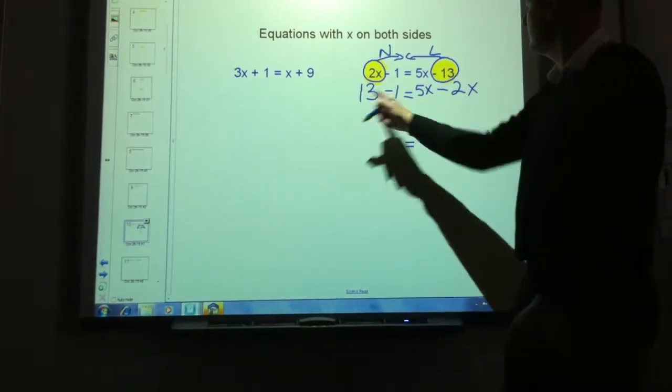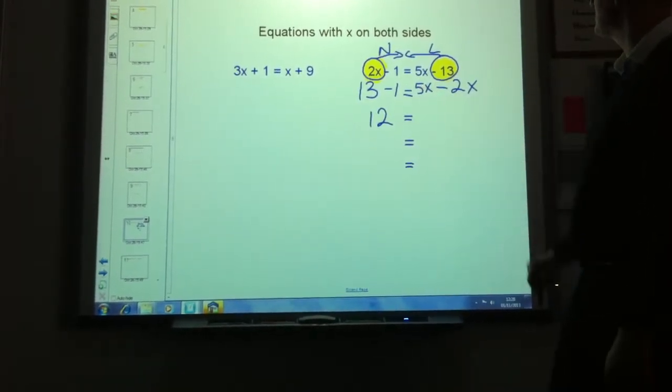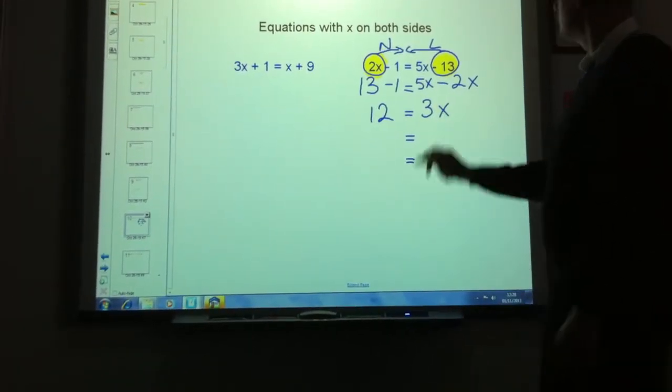Let's work these bits out. Thirteen take away one, twelve. Five x take away two x, three x.